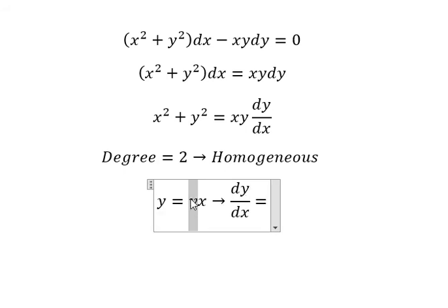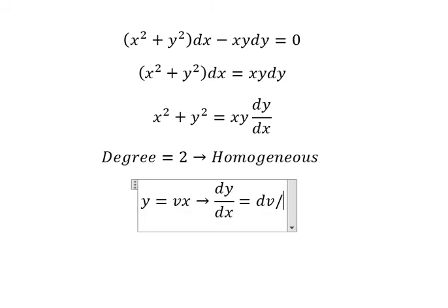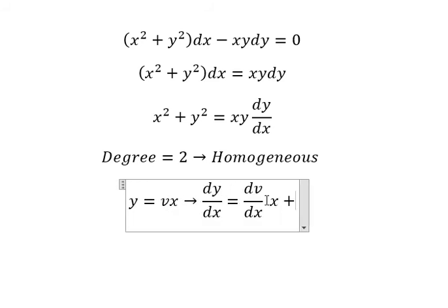First, the differential of v. We have dv/dx multiplied by x. Then, the differential of x gives 1, so we have v here.